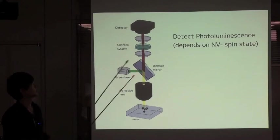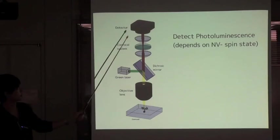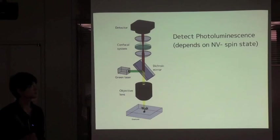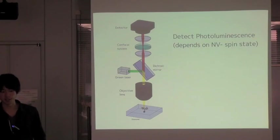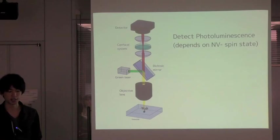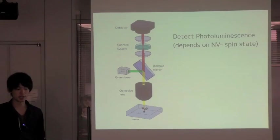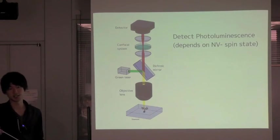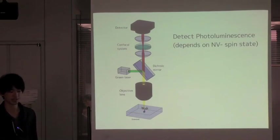The red photoluminescence appears. And finally, we detect the red photoluminescence through the confocal system. Photoluminescence intensity depends on the NV minus spin state, so we can get spin changes by the magnetic field from the proton optically.